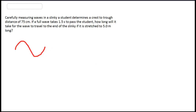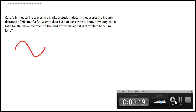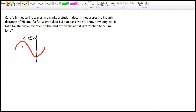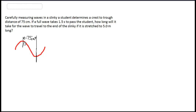Let's label that now. This distance actually only represents half a wave — we're going from crest to trough. The definition of one full wave is when the wave repeats itself, so we'd go from crest all the way around to the next crest. So 75 centimeters is only half a wave, and our full wavelength would be double that.